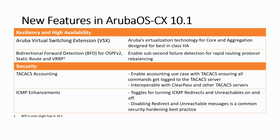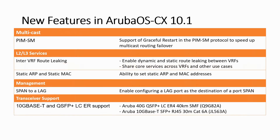TACACS accounting is interoperable with Aruba's ClearPass but also third-party TACACS servers are supported. To increase the security level on the switches, release 10.1 now allows you to disable ICMP redirects and TTL expires functions. For multicast routing, PIM sparse mode — release 10.1 now supports graceful restart. It is also possible now to perform route leaking between VRFs and configure static ARP and MAC addresses. In addition, release 10.1 allows you to create a SPAN on a link aggregation, and there is support for copper 10GB and 40GB extended range single-mode transceivers.